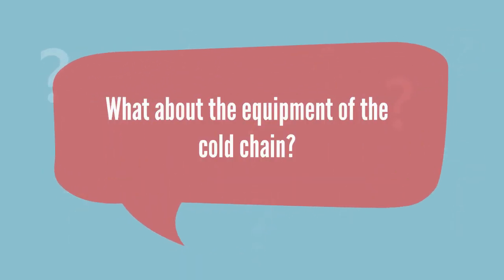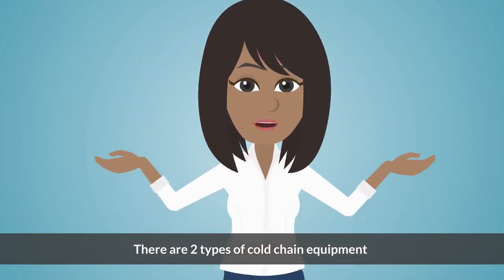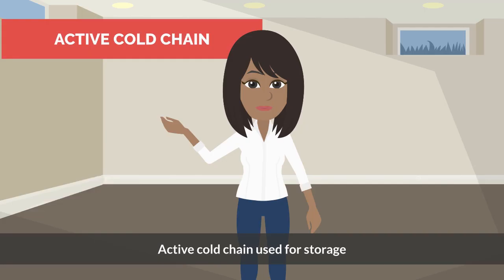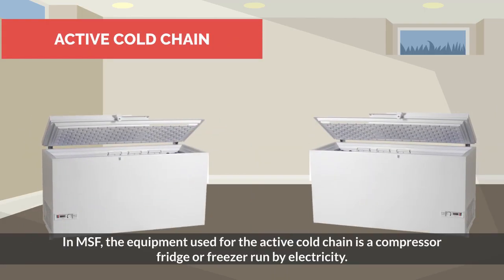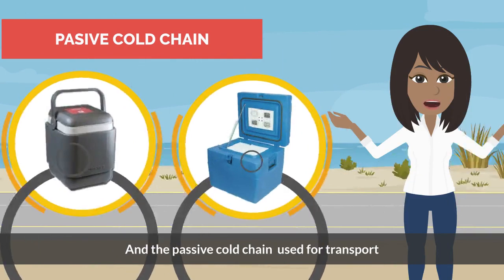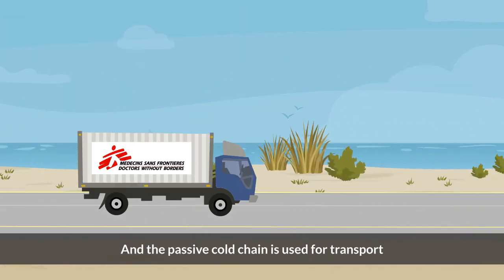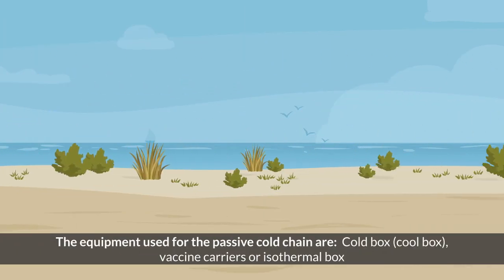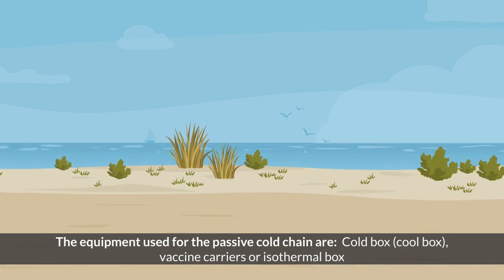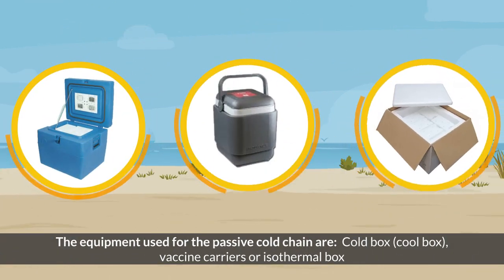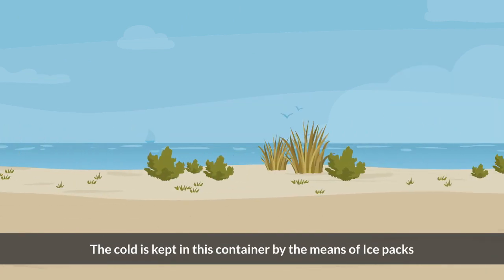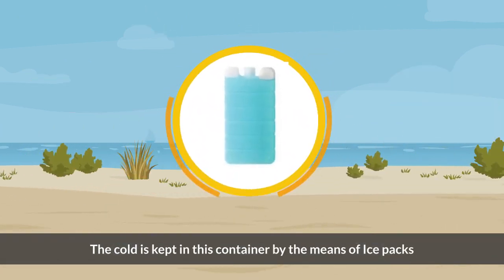What about the equipment of the cold chain? There are two types of cold chain equipment. Active cold chain, used for storage — in MSF, the equipment used for the active cold chain is a compressor fridge or freezer run by electricity. And the passive cold chain, used for transport — the equipment includes cold boxes, cool boxes, vaccine carriers, or isothermal boxes. The cold is kept in these containers by means of ice packs.